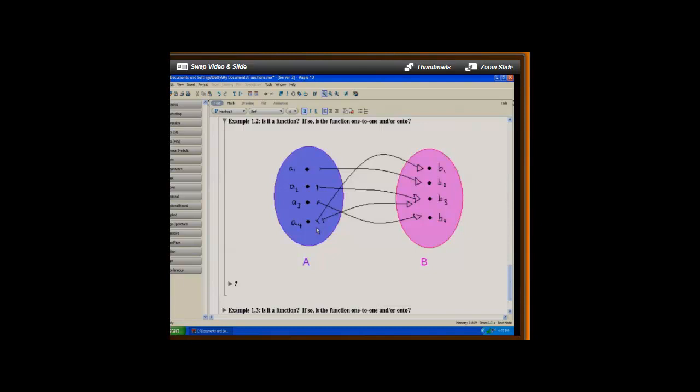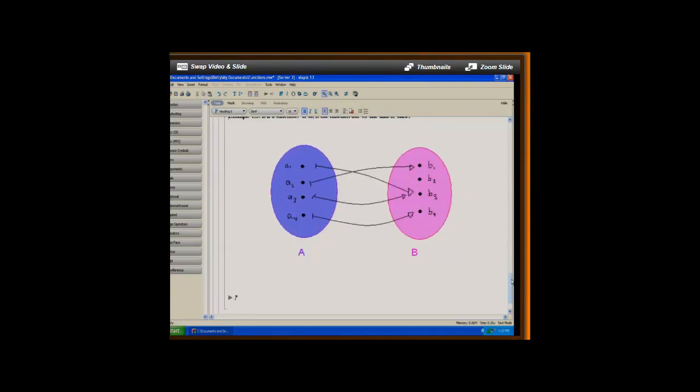For our last example, let's look at this diagram. First question, is it a function? Yes, we can see that it is because, as in the first example, each distinct member of A goes to exactly one member of B.